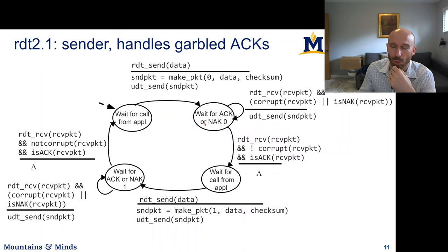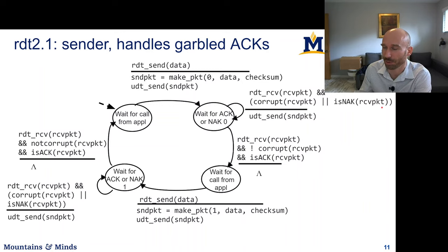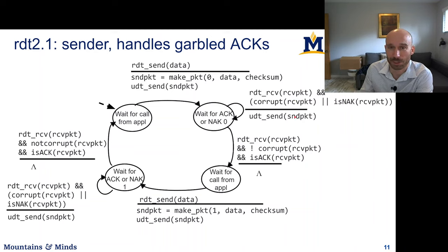The sender will now wait for an acknowledgement or negative acknowledgement for that particular packet with sequence number zero. If a packet is received and the packet is corrupt, or it is a negative acknowledgement — meaning we received a NAK from the receiver, or we received something unrecognizable — we're going to resend the packet with sequence number zero. On the other hand, if we receive a packet that is not corrupt and we can determine it's an ACK, we simply transition to waiting for a call from the application.